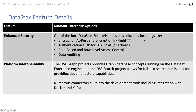Some additional security functionality comes out of the box with the enterprise edition: encryption at rest, in-flight encryption, out-of-the-box authentication for LDAP, Active Directory, and Kerberos, row-level access control, and auditing. The Datastax Enterprise Graph project allows real graph concepts inside the enterprise edition, helpful for workloads needing a graph data model. There are also lots of connectors built into the development tools, including Docker and Kafka integration right out of the box.